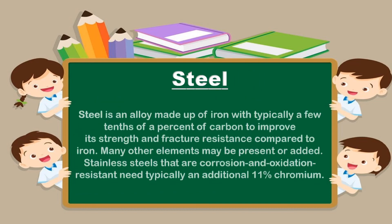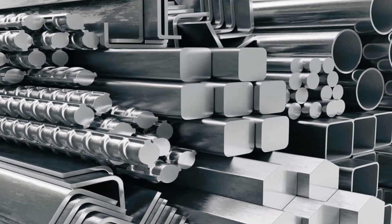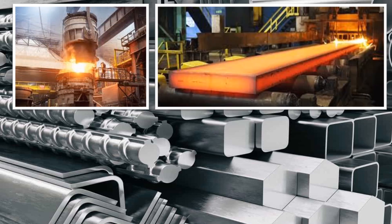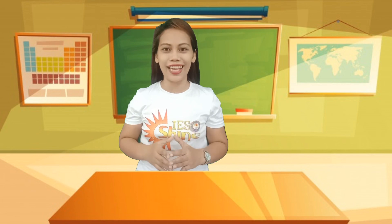Steel is an alloy made up of iron with typically a few tenths of a percent of carbon to improve its strength and fracture resistance compared to iron. Many other elements may be present or added. Stainless steels that are corrosion and oxidation resistant typically require an additional 11% chromium. Because of its high tensile strength and low cost, steel is used in buildings, infrastructures, tools, ships, trains, cars, machines, electrical appliances, and weapons. I hope you have enjoyed our science class today.